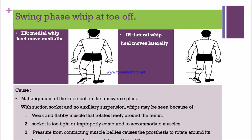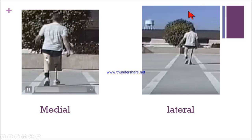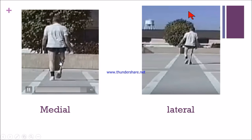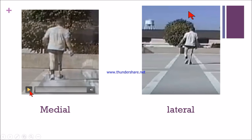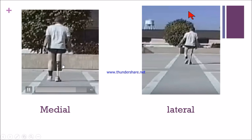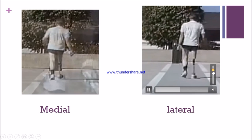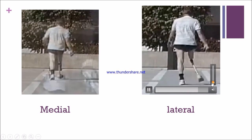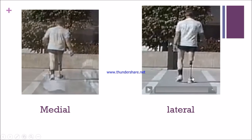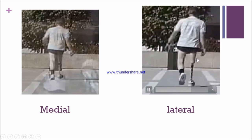If pressure from contracting muscles causes the prosthesis to rotate around its axis, rotation of the limb results. In the video, medial whip and lateral whip are demonstrated, showing how the leg and femur move during each type of whip.